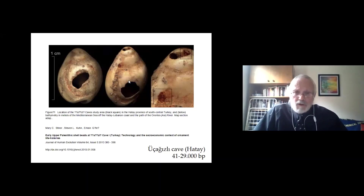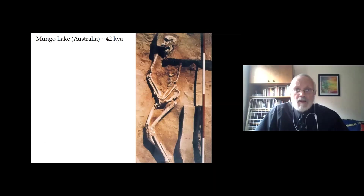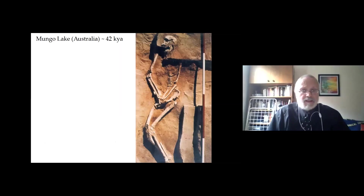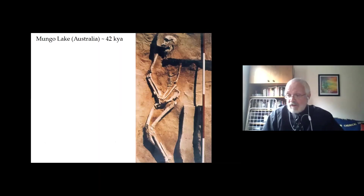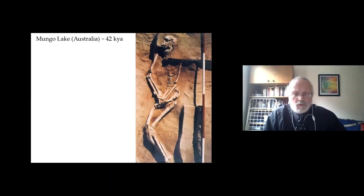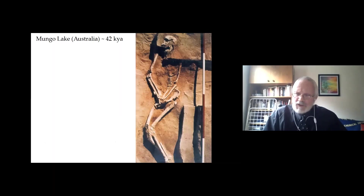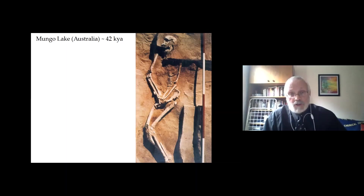We know also that there are a lot of funerary practices that develop in the Middle Stone Age. We know there is ochre engraved, and we know that there is some form of ritual practiced as early as 150,000 years ago. There is a cranium of a child from the site of Herto in Ethiopia where the cranium shows signs of having been polished, meaning it was manipulated post-mortem — this points to some form of ritual.